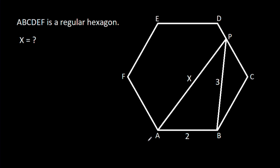In this video, we have been given that ABCDEF is a regular hexagon and AB is 2, BP is 3, and AP is X. Then we have to find X.